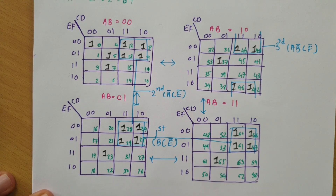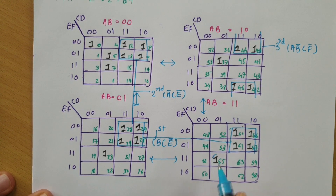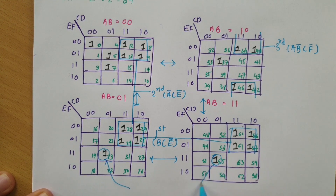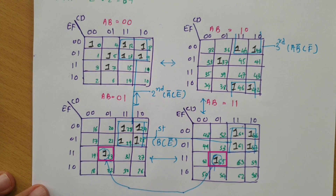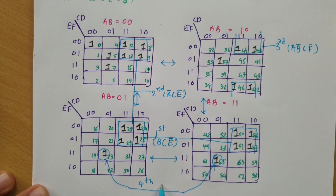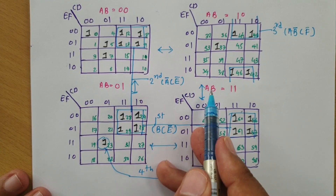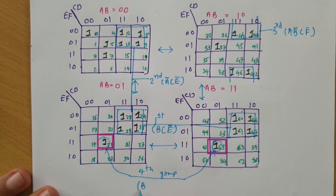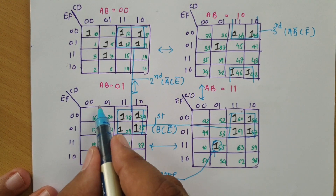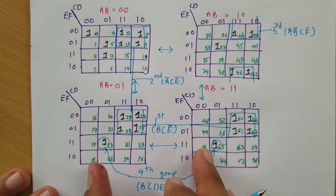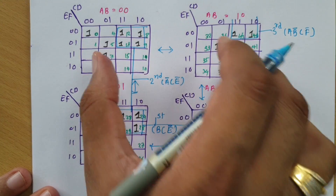Now looking at other possibilities: this one and this one are forming on each other, so we take them as a common group — this is my fourth group. In this fourth group, AB is 01 and 11, so B is common, meaning B is 1. Then CD is 01, meaning C̄·D. EF is 11, so E·F. Therefore, the fourth group gives B·C̄·D·E·F.